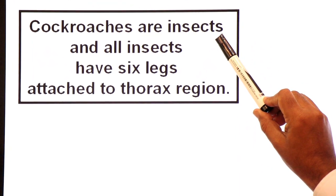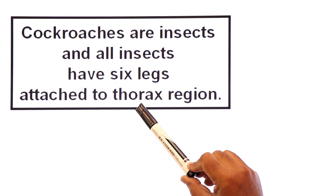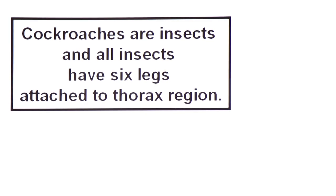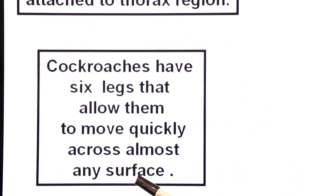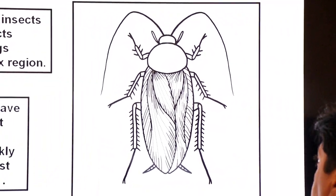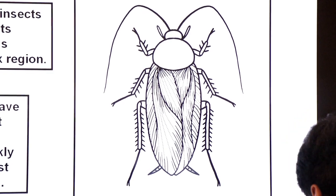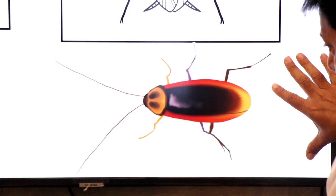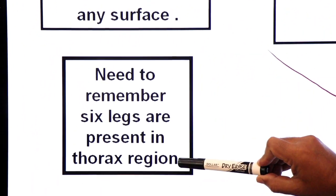Cockroaches are insects, and all insects have six legs attached to their thorax region. Cockroaches have six legs that allow them to move quickly across almost any surface. This diagram shows a cockroach with six legs — three left legs and three right legs. Six legs are present in the thorax region.